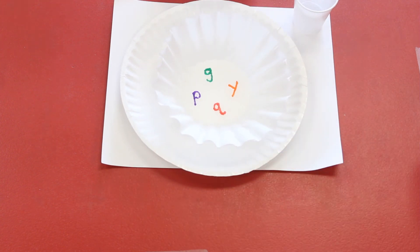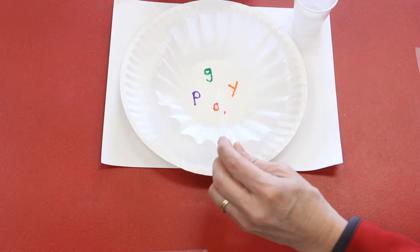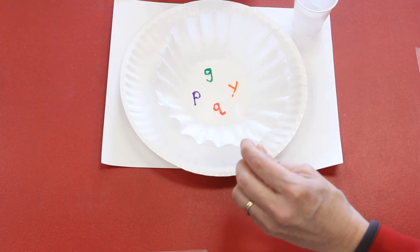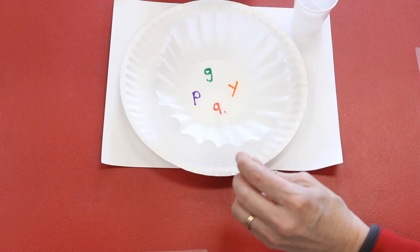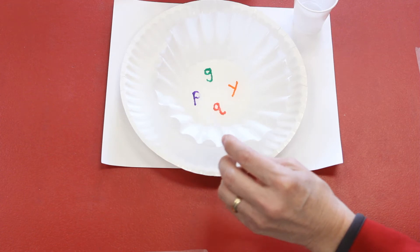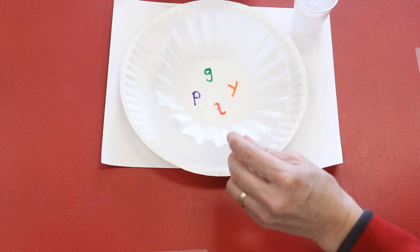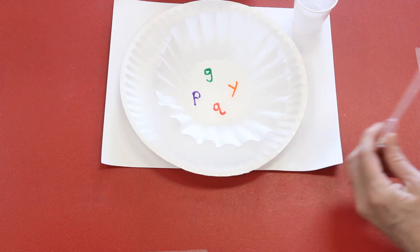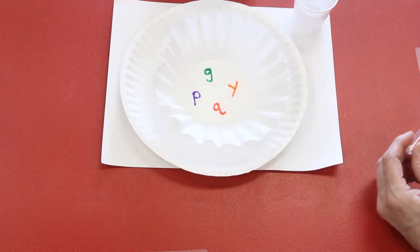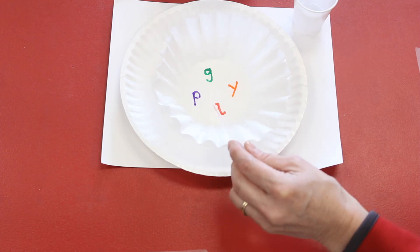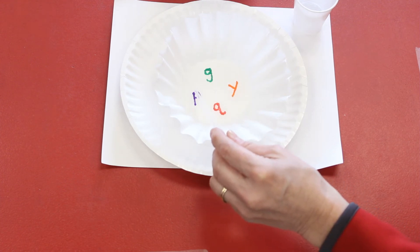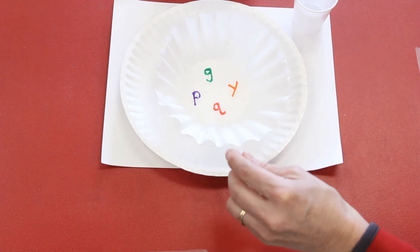All right, so on your coffee filter you should have these letters: G, Y, Q, and P. Hey, all of those letters have tails, don't they? Okay, all these lowercase letters have a line that goes below the baseline. Let's say those again: G, Y, Q, and P.